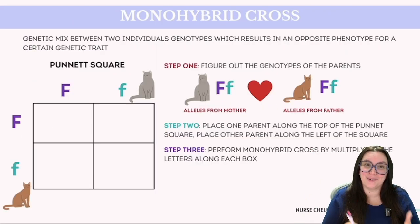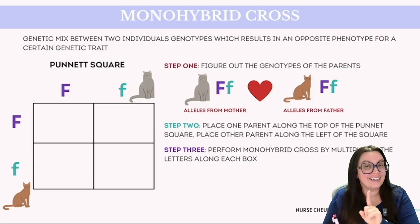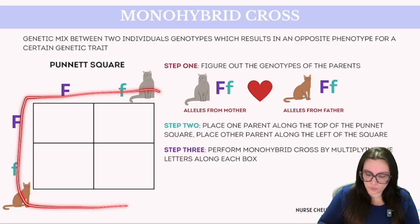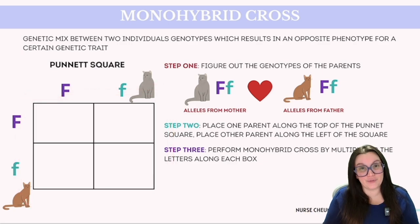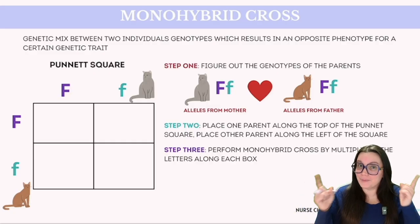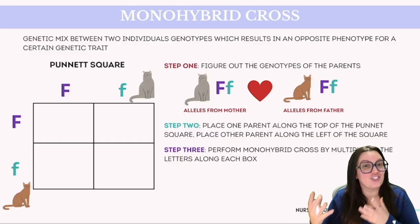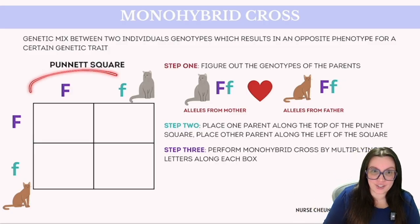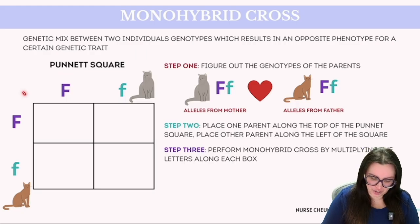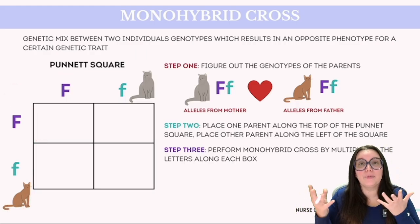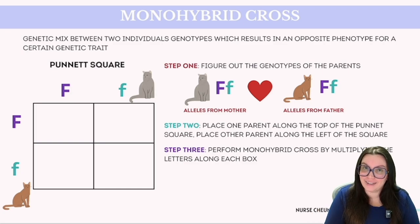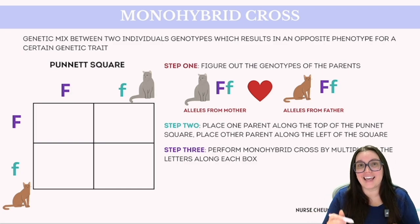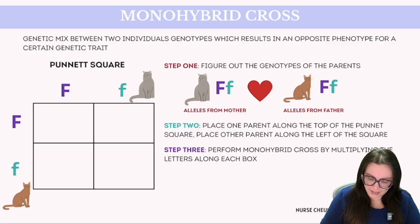Let's tackle a monohybrid cross, where mono signifies the focus of a single trait — in this instance, fur. To analyze this, we are going to construct a Punnett square. It's divided into four sections, and in this instance, we're going to look at two heterozygous cats being crossed together. Our first step is to identify the parent's genotypes — in this case, two heterozygous cats. For step two, we position one parent's genotype at the top and the other parent's genotype on the side of our Punnett square. Then for step three, we proceed by crossing them, ensuring that whenever we have a dominant allele — our capital F — we list that first for consistency. We multiply the top of the square by the side of the square.